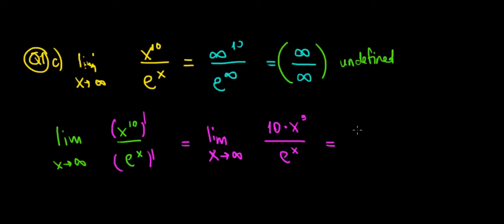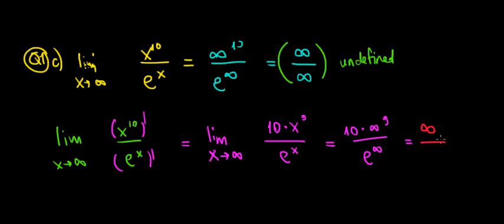If we substitute infinity, we have 10 times infinity to the power of 9 over e to the power of infinity. Infinity to the power of 9 is very large, multiplied by 10 is even larger, so we approach infinity. e to the power of infinity again approaches a very large number. So that's infinity over infinity — undefined once more. If it's still undefined, let's try again.